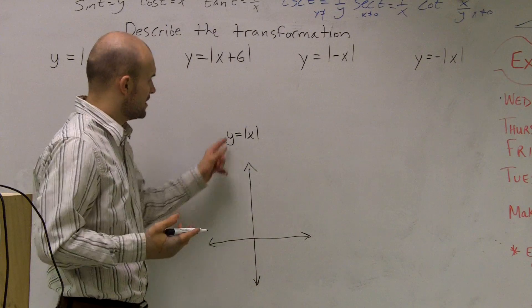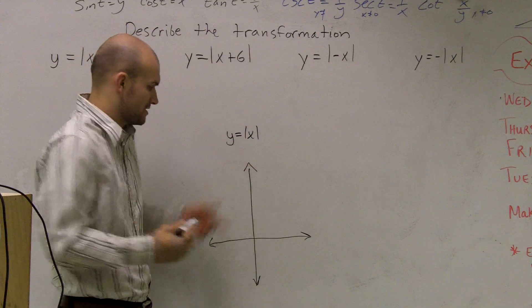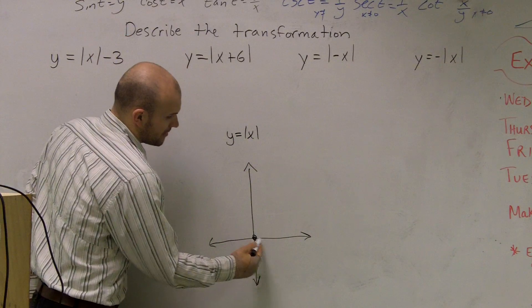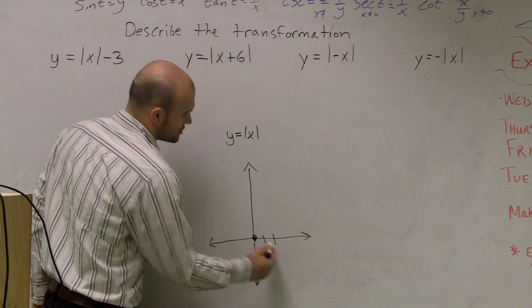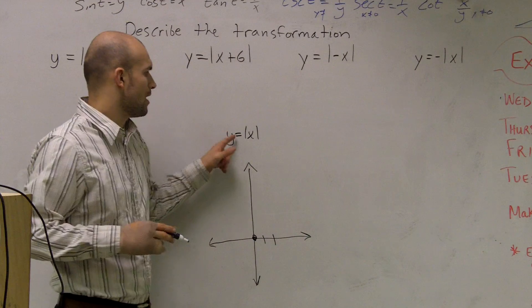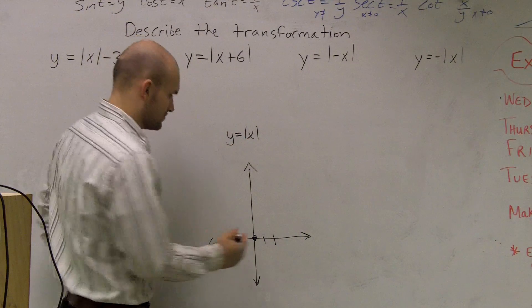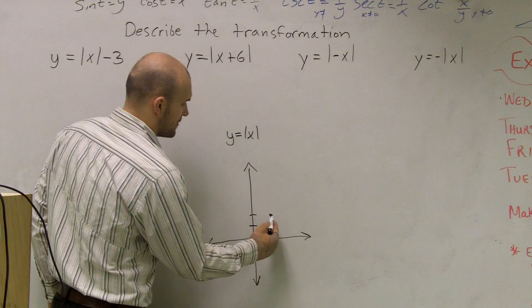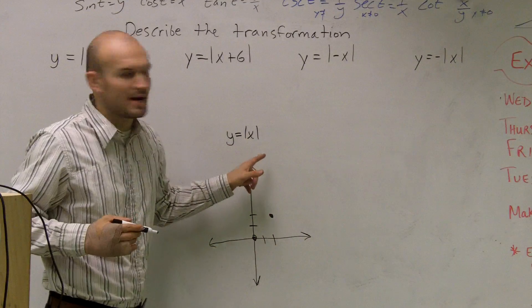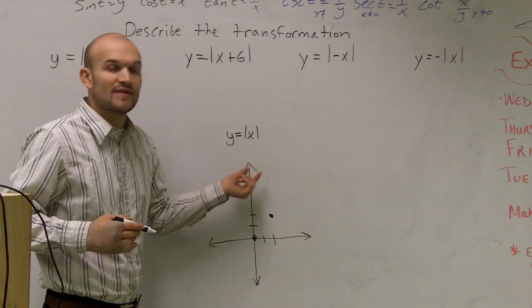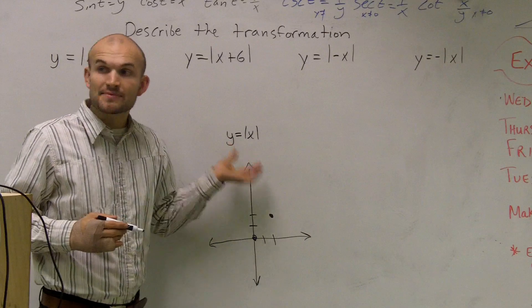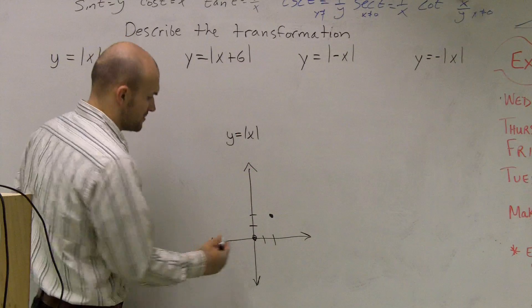If we were to plug in numbers for this, if I plugged in 0 for x, I'd get 0. And let's say I plugged in 2. Well, y equals the absolute value of 2 is 2. And then what if I plugged in x equals negative 2? The absolute value of negative 2 is still going to be 2.